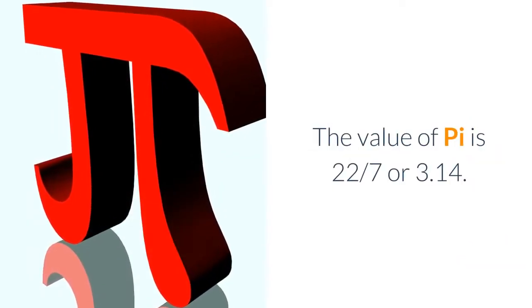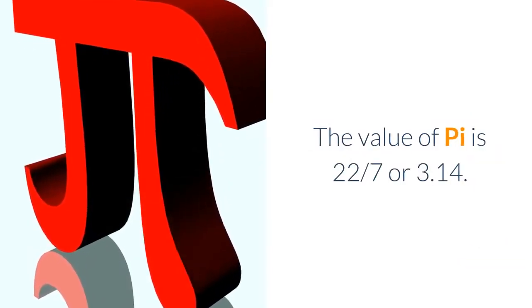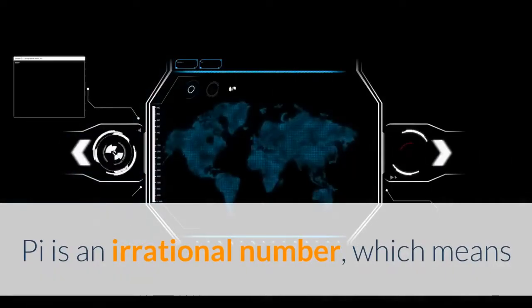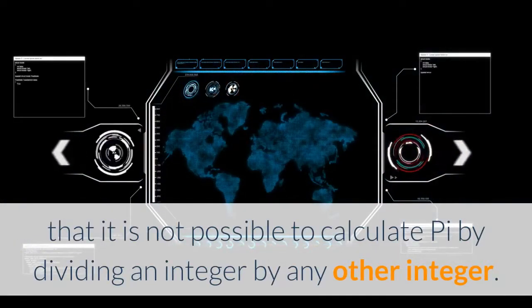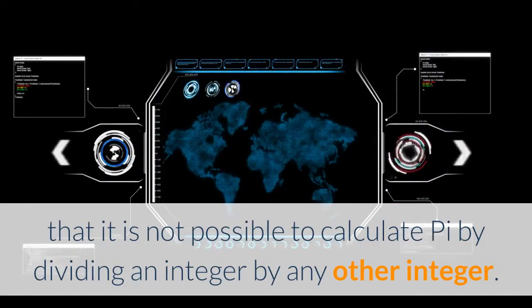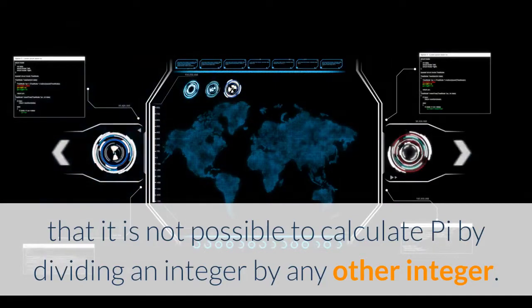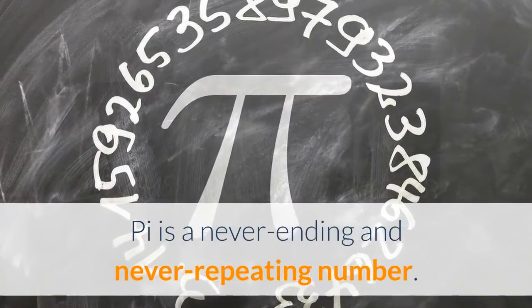The value of Pi is 22/7 or 3.14. Pi is an irrational number, which means that it is not possible to calculate Pi by dividing an integer by any other integer. Pi is a never-ending and never-repeating number.